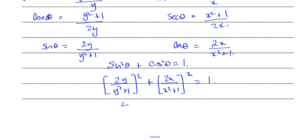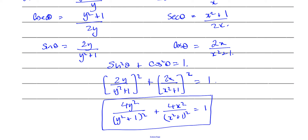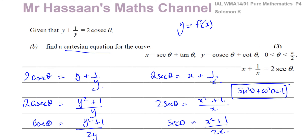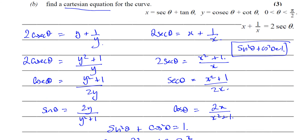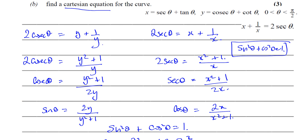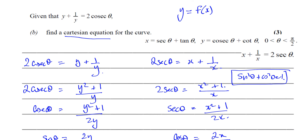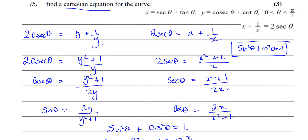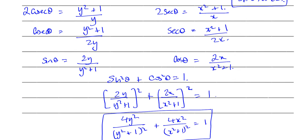Simplifying a little: 4y²/(y² + 1)² plus 4x²/(x² + 1)² equals one. And there we have our Cartesian equation for this curve. Any time you have trigonometry and need to find the Cartesian equation, always think in terms of the identities you know — here I expressed things as sin θ and cos θ, then connected them with sin² θ plus cos² θ equals one. That's the answer to part B.